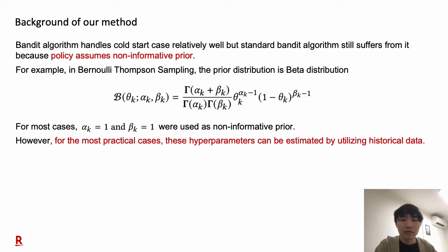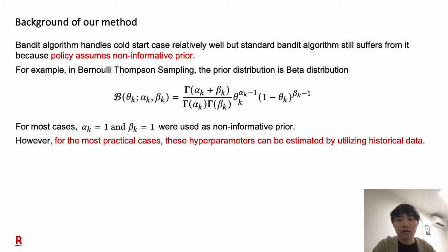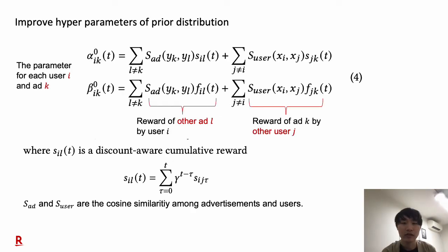Bandit algorithms handle cold-start cases relatively well, but standard bandit algorithms still suffer from it because the policy assumes a non-informative prior. For example, in naive Thompson sampling, the prior distribution is a beta distribution, and for most cases we use a non-informative prior. However, for practical cases, these hyperparameters can be estimated by utilizing historical data. I will show how we improve the hyperparameters of the prior distribution.